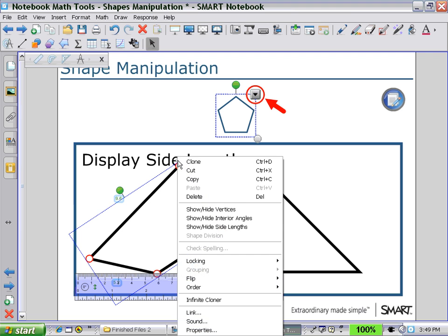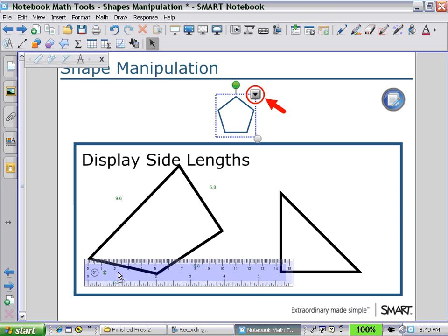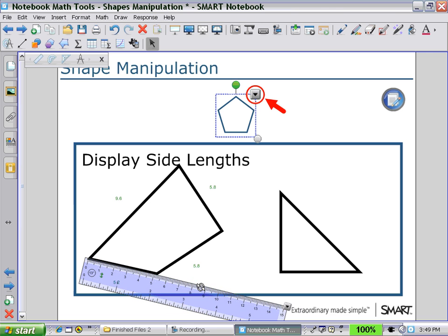Again, let's hide the vertices and then take our measurement, and show that we have about 5.2 centimeters.